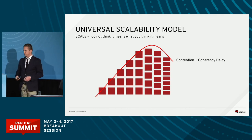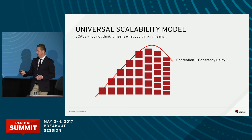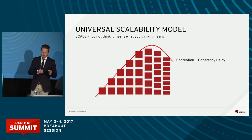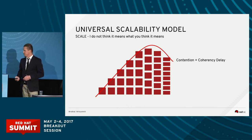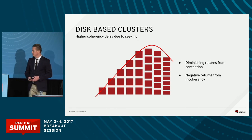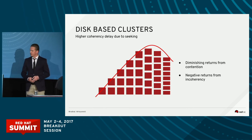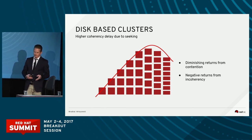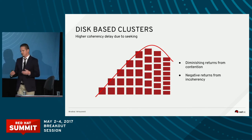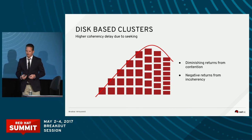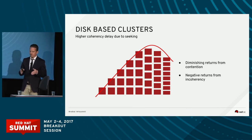You really need admission control at the front end, and this is what some of the tools now landing in Cinder can help you do — binding capacity to a unit of storage. Again, you have diminishing returns from contention when the backend starts to become overloaded, and in the case of disk-based clusters, you see negative returns from the incoherency or seek delays imparted on the system when you have so many volumes that the disk backend starts thrashing.